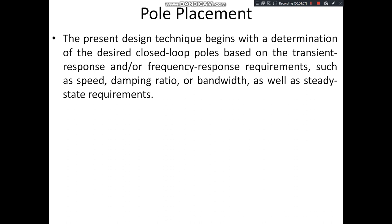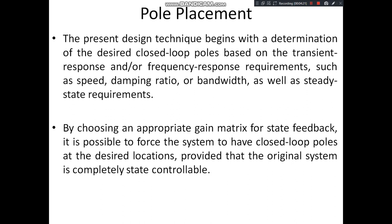The design technique begins with the determination of desired closed-loop poles based on transient response and frequency response requirements such as speed, damping ratio, or bandwidth, as well as steady-state requirements. By choosing an appropriate gain matrix for state feedback, it is possible to force the system to have closed-loop poles at the desired locations, provided the original system is completely state controllable. Only if the system is completely state controllable is it possible to locate the poles at the desired locations.